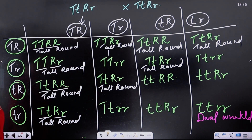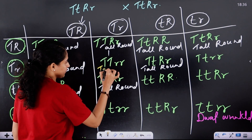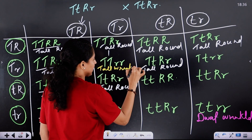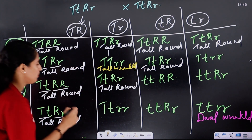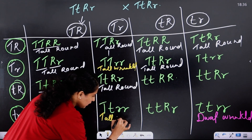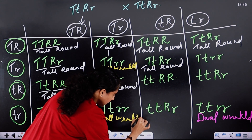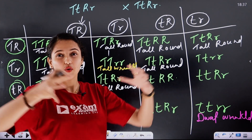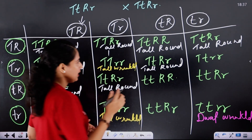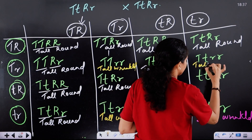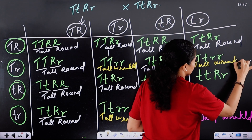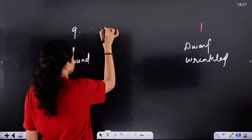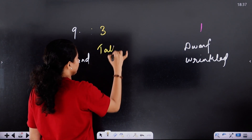With different characters here: this is tall and round as a parental combination. But we also observe tall and wrinkled. Now we have a new combination — tall and wrinkled is a new combination.